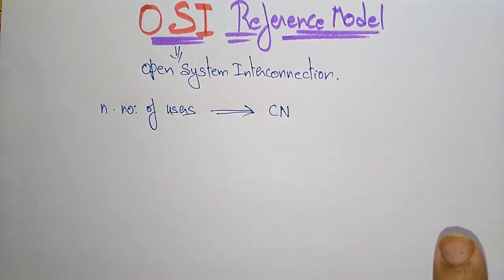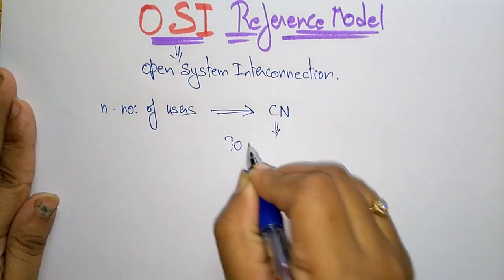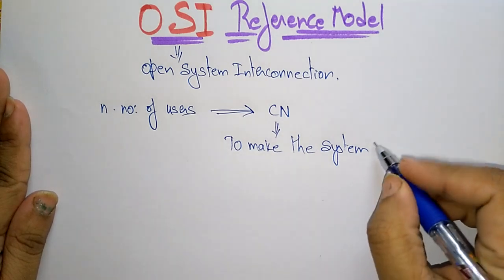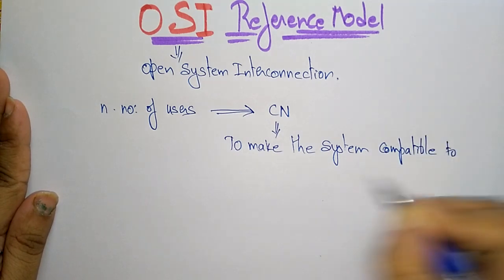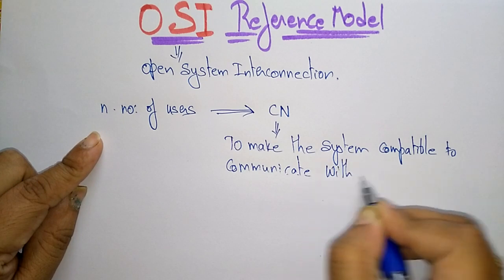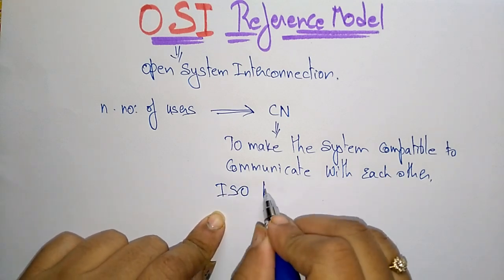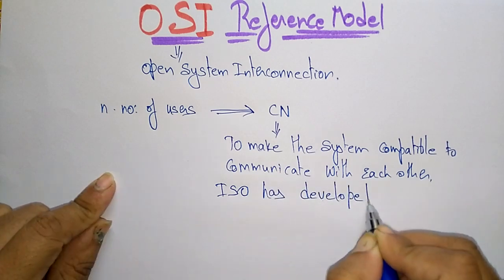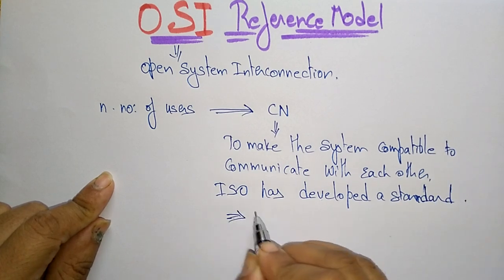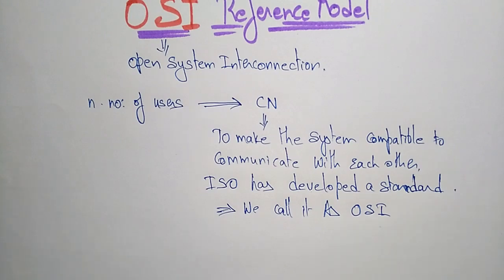To ensure national and worldwide data communication, the system must be developed so that systems are compatible to communicate with each other. To make the system — that is, the computer network — compatible, these n number of users have to communicate with each other. So ISO has developed a standard.